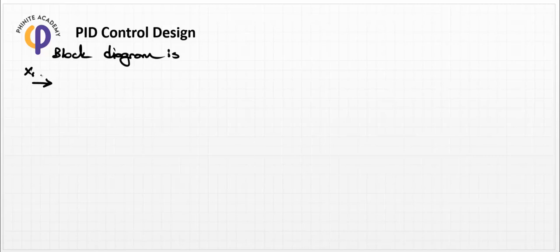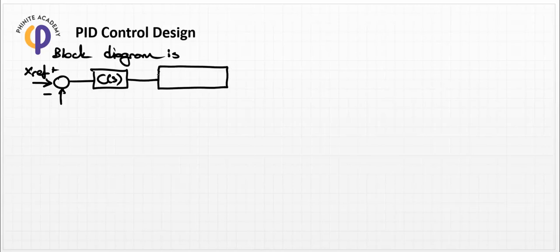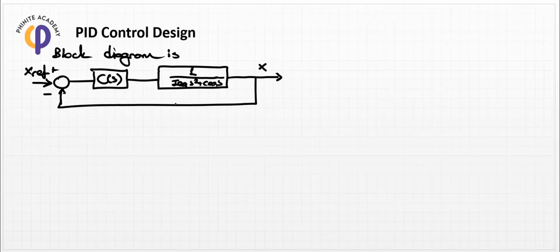This is the standard block diagram. The block diagram has x_ref as input, plus/minus summing junction, and we need to build the C(s) controller block. We also have a plant model: one divided by (I_x * s^2 + c_x * s). We have the output variable x, unity gain feedback, and an ideal sensor that correctly measures the position x.